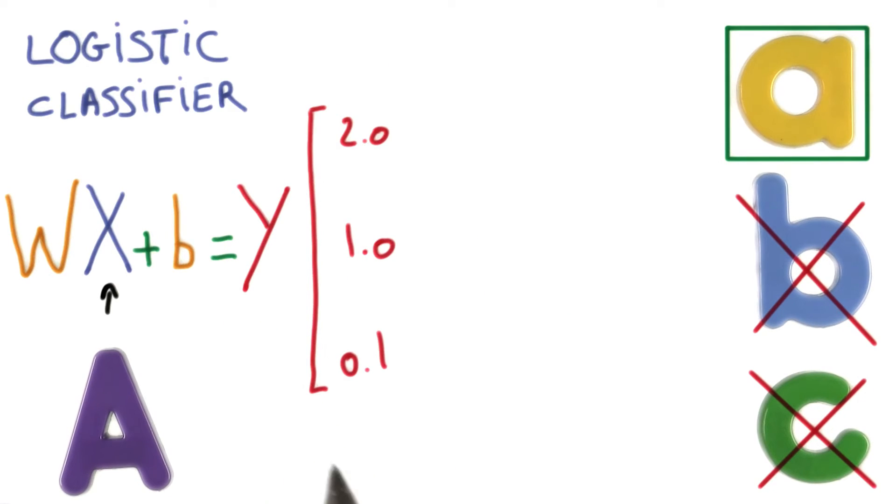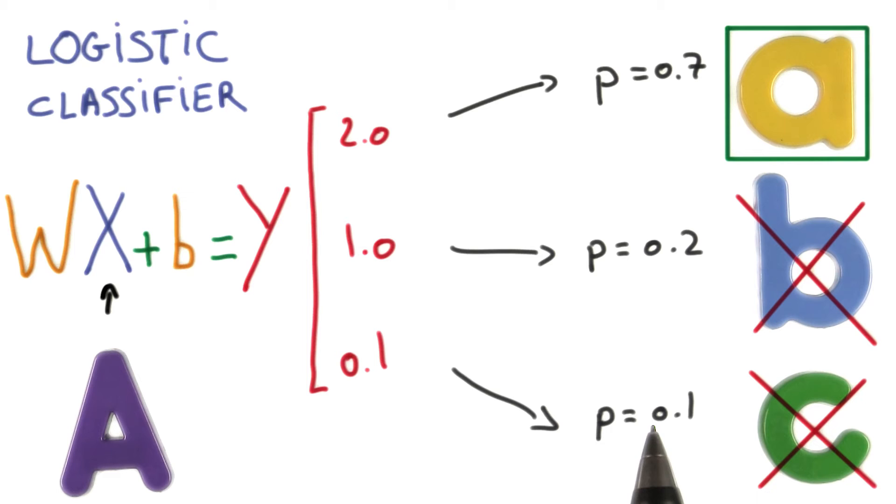How are we going to use those scores to perform the classification? Well, let's recap our task. Each image that we have as an input can have one and only one possible label. So, we're going to turn those scores into probabilities.